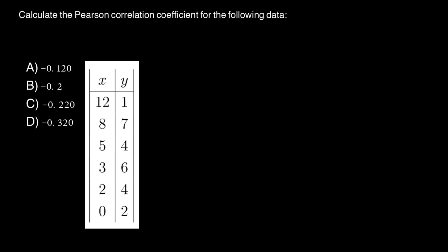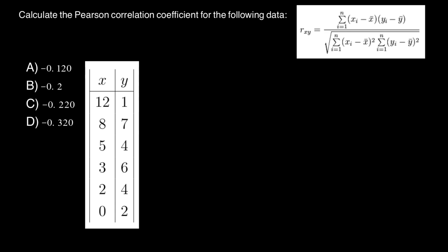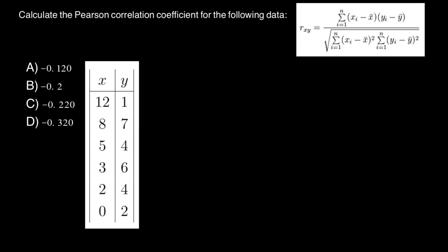Hello and welcome to Nikolai's genetics lessons. Today's problem is: calculate the Pearson correlation coefficient for the following data. We have a data set for X and Y, and here's the variance of the answers. In order to solve this problem, we are going to use this formula.